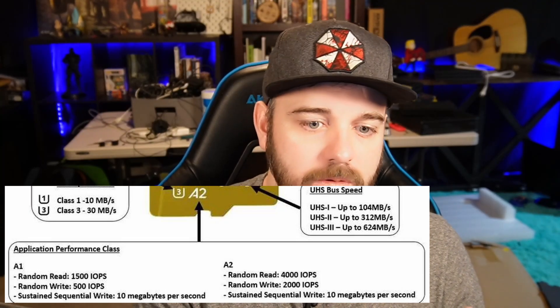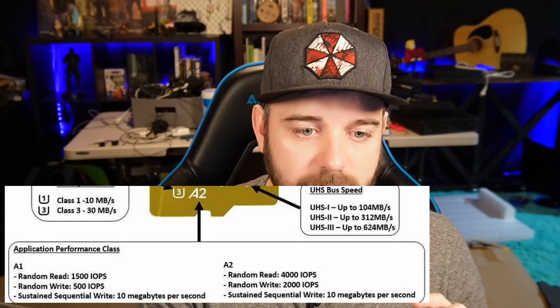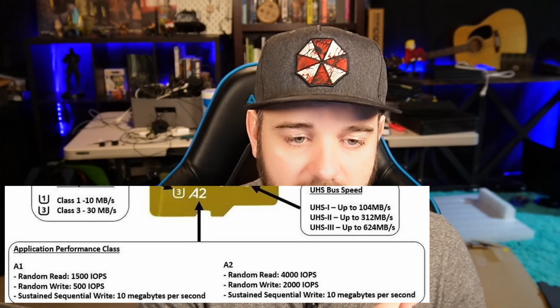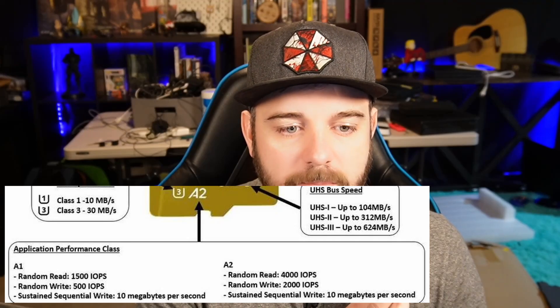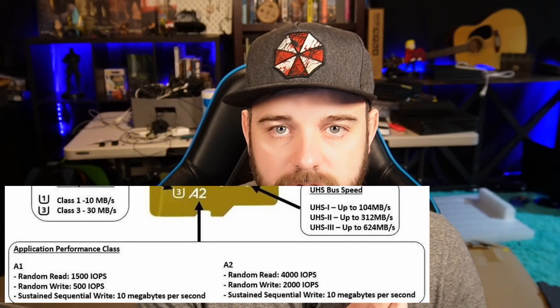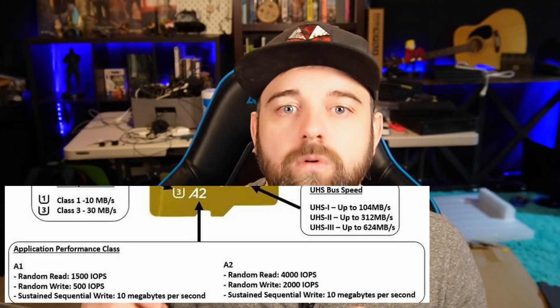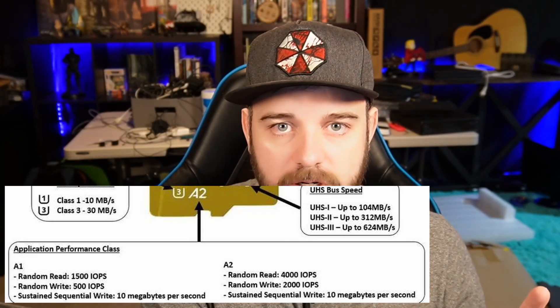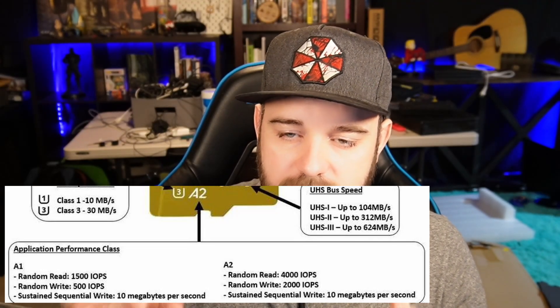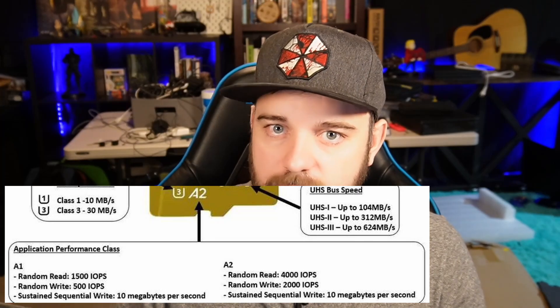For the Steam Deck, I recommend the A2. Those random read and write IOPS you see on the diagram do matter, but what matters more is real-world tests. The cards I have linked in the description are ones that I've found — from other YouTubers or articles — to perform really well in real-world tests, and they're specifically good for the Steam Deck.